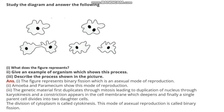Study the diagram and answer the following: What does the figure represent? Give an example of an organism which shows this process. Describe the process shown in the picture. The answer is: the figure represents binary fission, which is an asexual mode of reproduction. Amoeba and Paramecium show this mode. The genetic material first duplicates through mitosis leading to duplication of the nucleus through karyokinesis, a constriction appears in the cell membrane which deepens, and finally the single parent cell divides into two daughter cells. The division of cytoplasm is called cytokinesis. This mode is called binary fission.